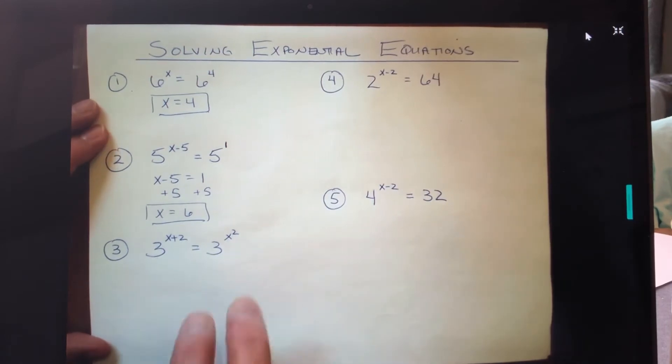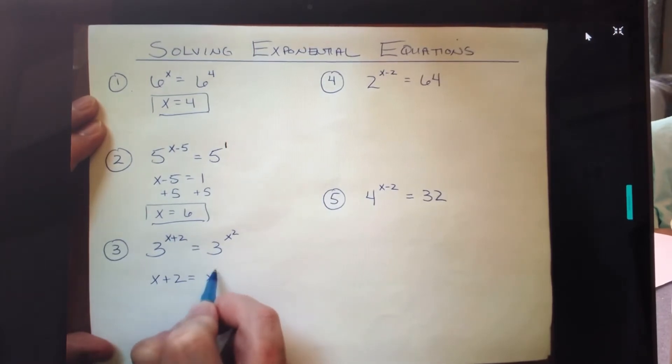Third example: again, the bases match, so fairly straightforward. This problem is basically begging at you to take these exponents, bring them down, set those expressions equal to each other. What you'll notice in this example, unlike the previous two, this is not a linear equation—it's actually a quadratic.